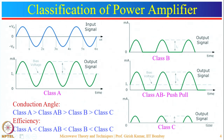The next type is class C amplifier. In these amplifiers, output current flows for only a very small portion of the input signal, generating short high-power pulses. When these pulses are connected with an LC tank circuit, they produce a sinusoidal carrier wave. So class C amplifiers are used to generate sinusoidal carrier waves.